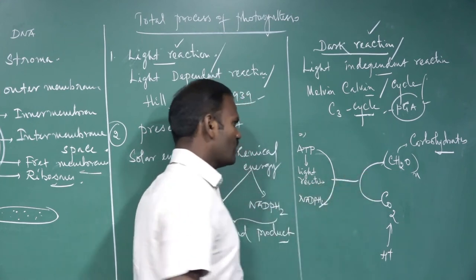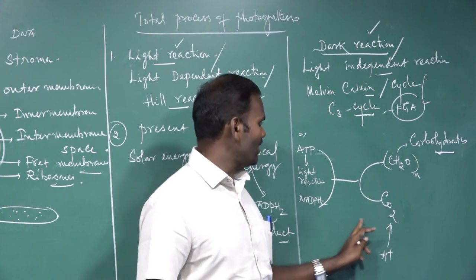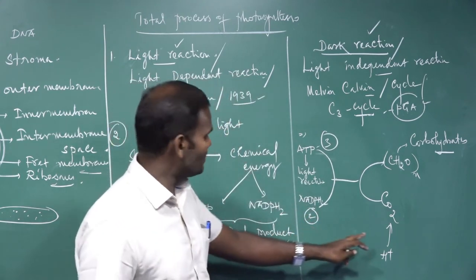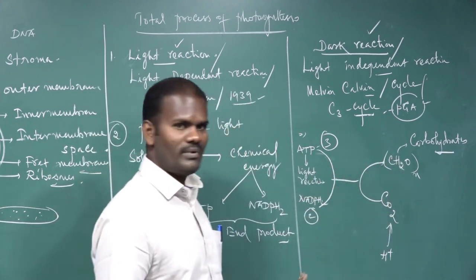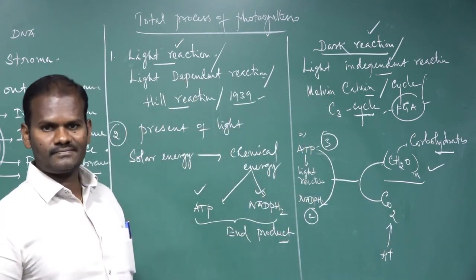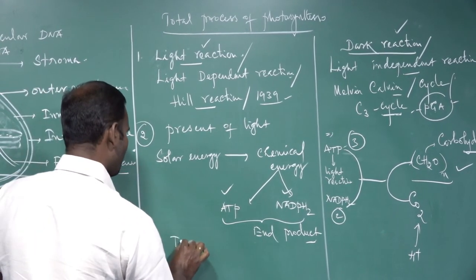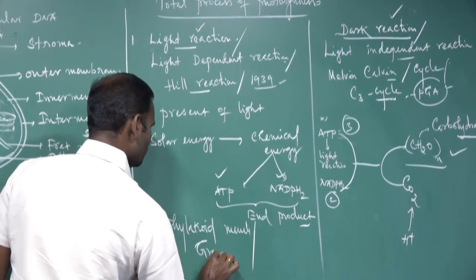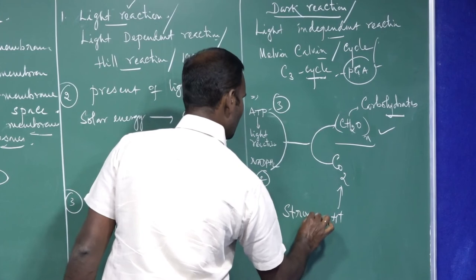For the reduction of one molecule of carbon dioxide into carbohydrate, 3 ATP and 2 NADPH2 are required — synthesized by light reactions and utilized by dark reactions. The end product of dark reaction is carbohydrate; the end product of light reaction is ATP and NADPH2. The light reaction takes place in the thylakoid membrane, also called granum of the chloroplast. Dark reactions take place in the stroma of the chloroplast.